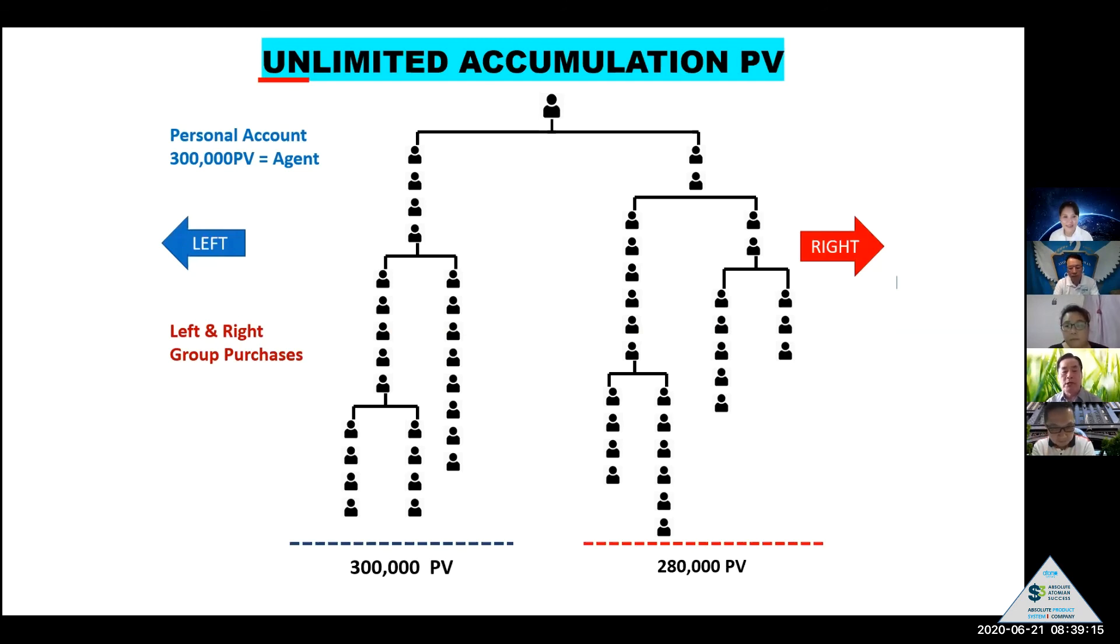But this smaller leg never ever gone away until what - match 300. That meaning in three months or six months, actually one year, keep going on until match 300.